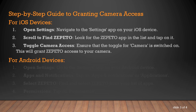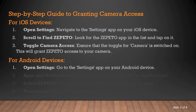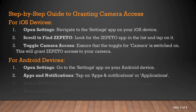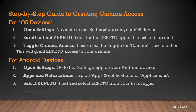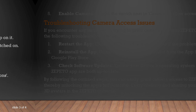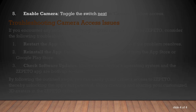For Android Devices: Open Settings — go to the Settings app on your Android device. Apps and Notifications — tap on Apps and Notifications or Applications. Select Zepetto — find and select Zepetto from your list of apps. Permissions — tap on Permissions. Enable Camera — toggle the switch next to Camera to allow access.